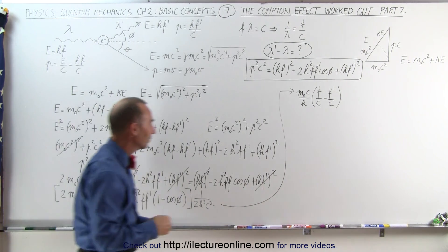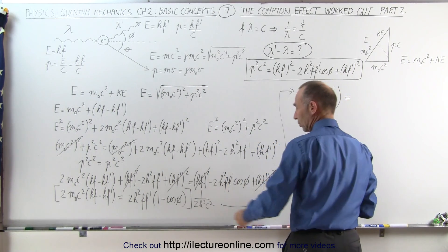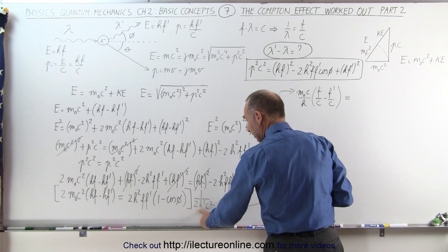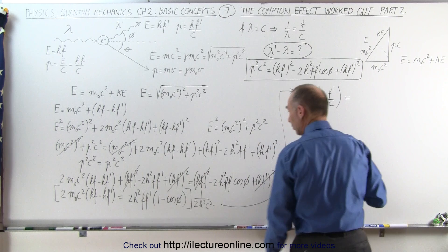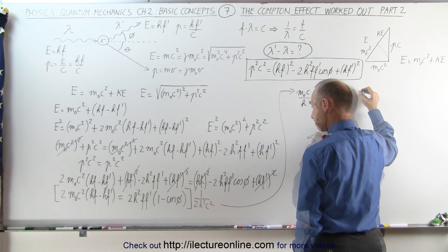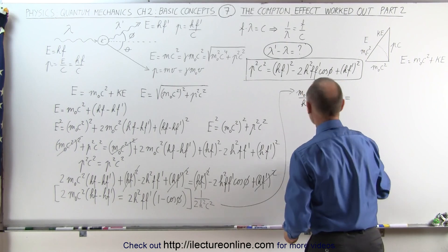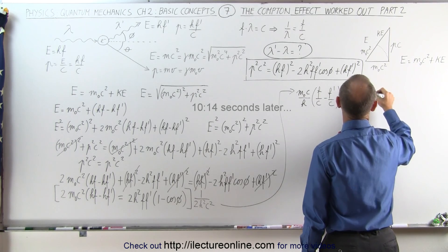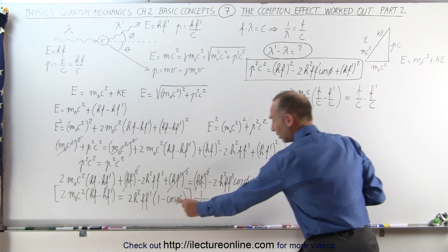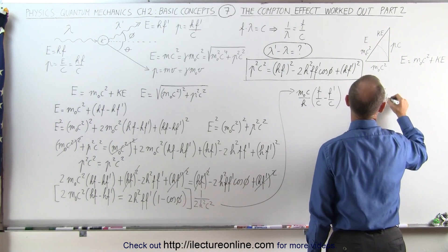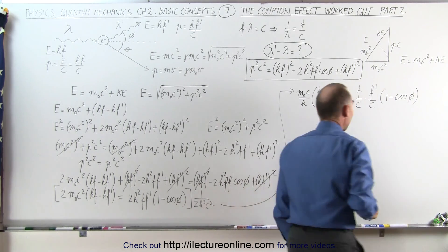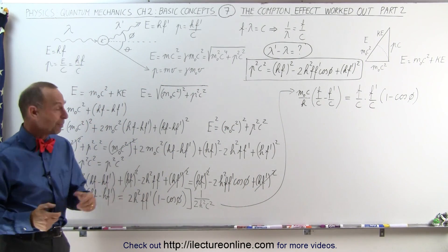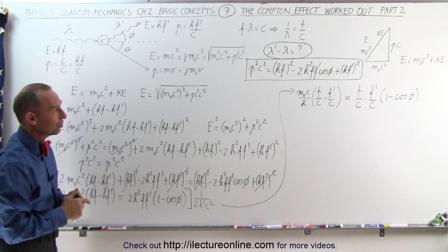On the right side, the 2's cancel out, the H squared terms cancel out, and we have F over C times F prime over C, leaving still a C squared in the denominator, times 1 minus the cosine of phi. That was quite a mathematical trick — Compton came up with a very clever approach to simplify the equation to that form.